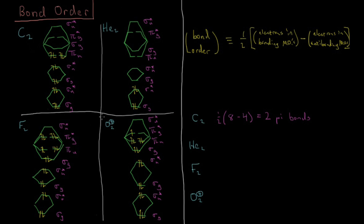What about helium? For He2, we have one-half of (2 electrons in the sigma-g bonding orbital minus 2 electrons in the sigma-star-u antibonding orbital), which gives zero. You notice that helium is a noble gas, and noble gases generally prefer not to bond. That's because when you bring two noble gases together, you always get an equal number of bonding and antibonding electrons, so you get no net bond. These two helium atoms are not bonded to each other, which is why noble gases behave as separate atoms.